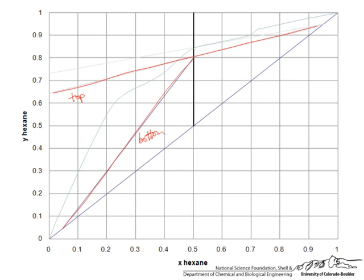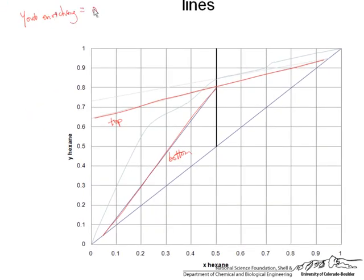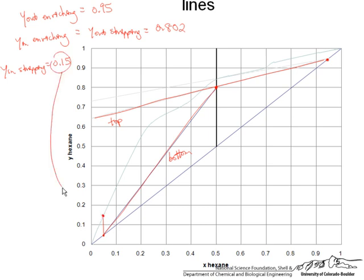So our limits of integration, Y out enriching equals 0.95. So that's up here. Y in enriching equals Y out stripping equals 0.802 here. And then Y in stripping equals, because it's a partial reboiler, 0.15 because for a partial reboiler we have X out which is XB is in equilibrium with the vapor coming off of the partial reboiler. So we go up here to get 0.15 and then this 0.802 was right here and 0.95 was right here.